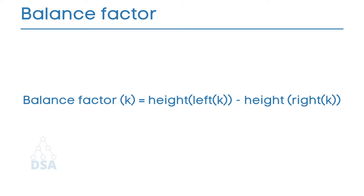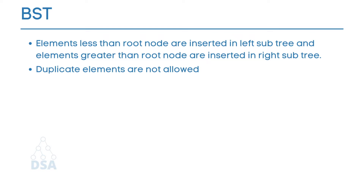When inserting data in the tree, we insert it in the form of a binary search tree. Elements less than the root node are inserted in the left subtree and elements greater than the root node are inserted in the right subtree. One important property of the binary search tree is that duplicate elements are not allowed.